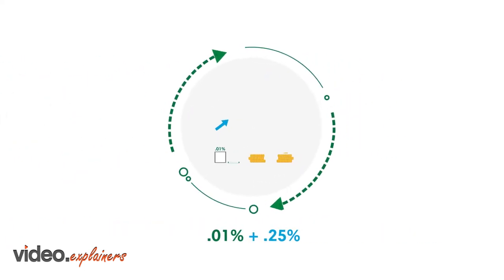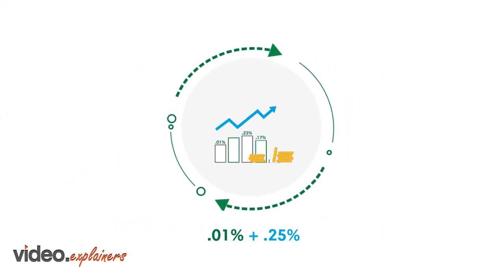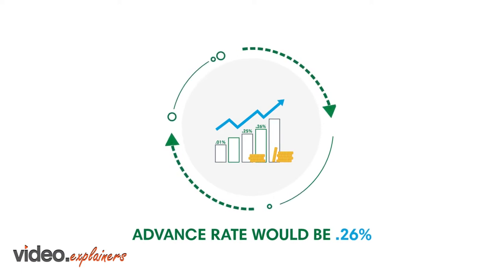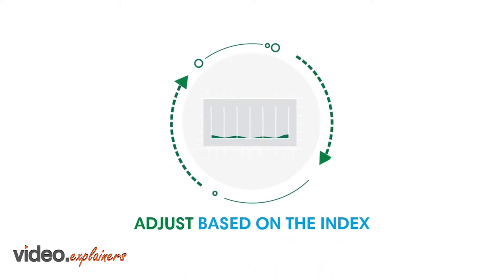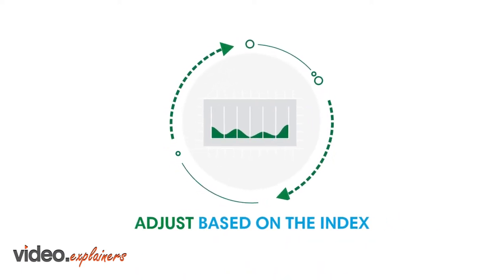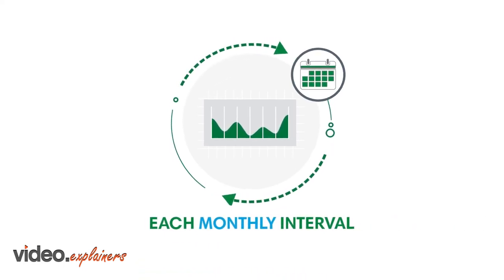If the one-month discount note index was 0.01%, your advance rate on day one would be 0.26%. Your rate would adjust based on the index plus the spread at each monthly interval thereafter.